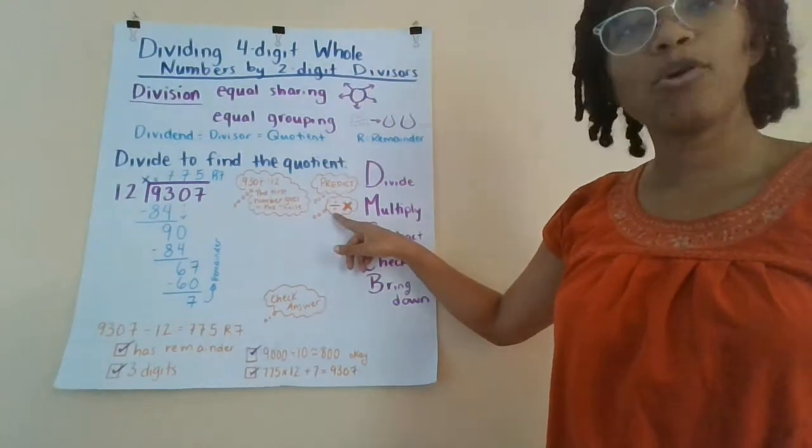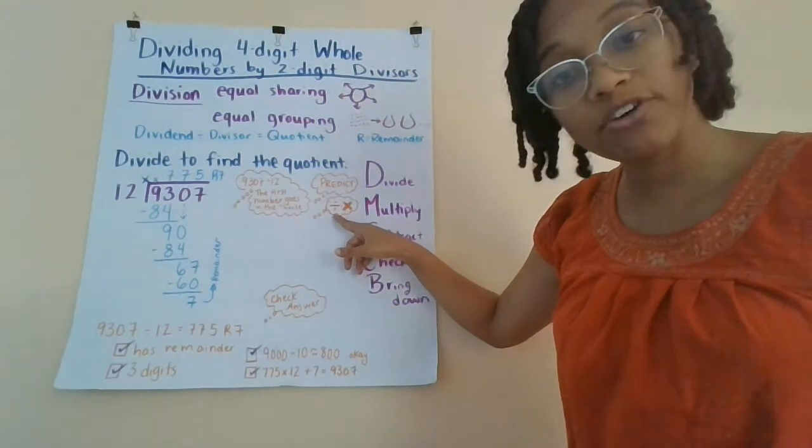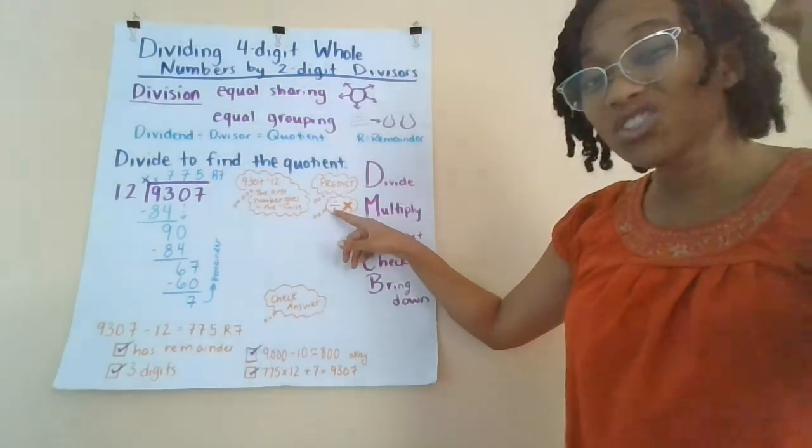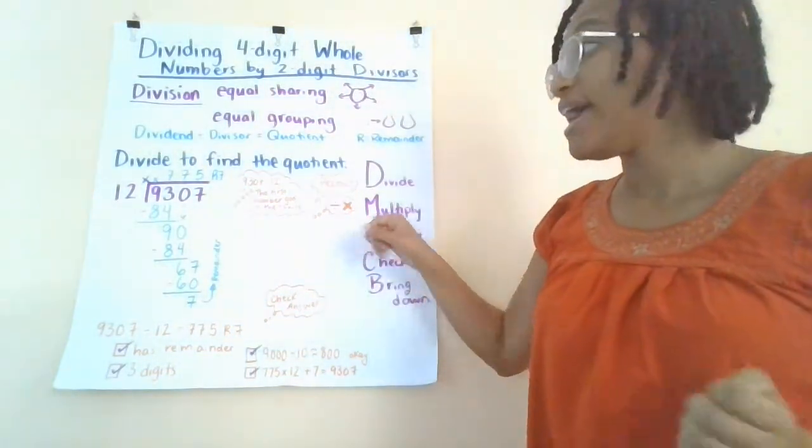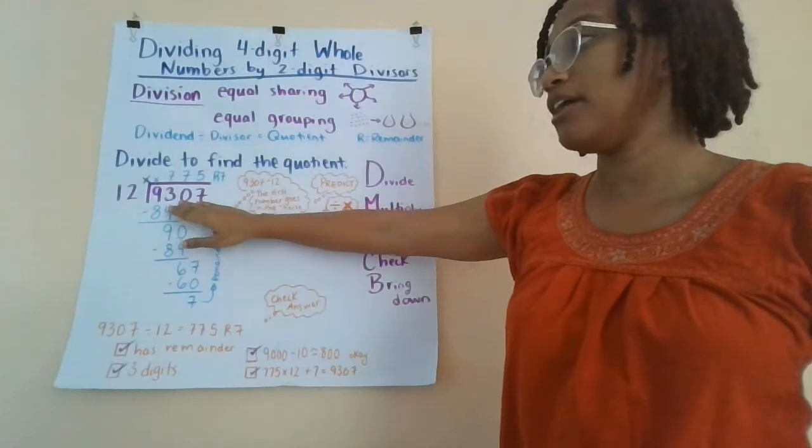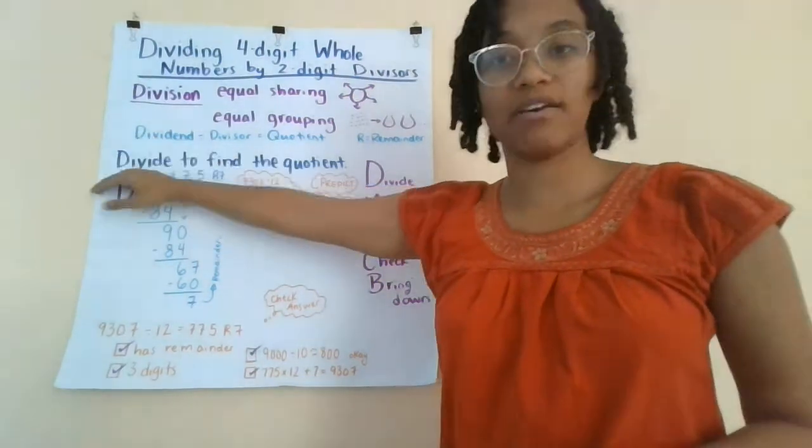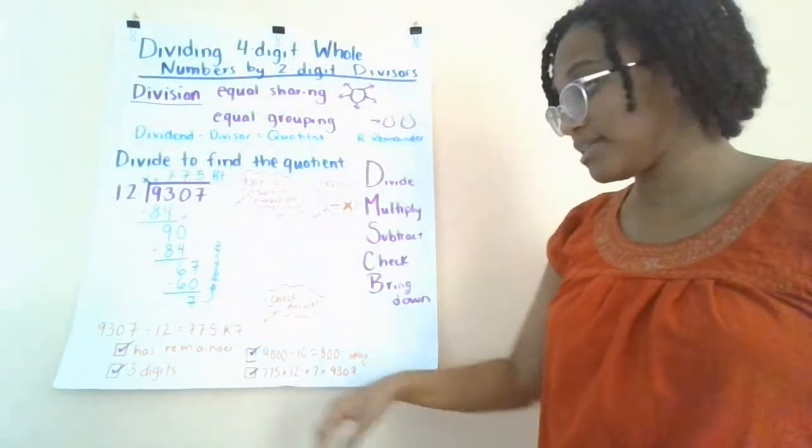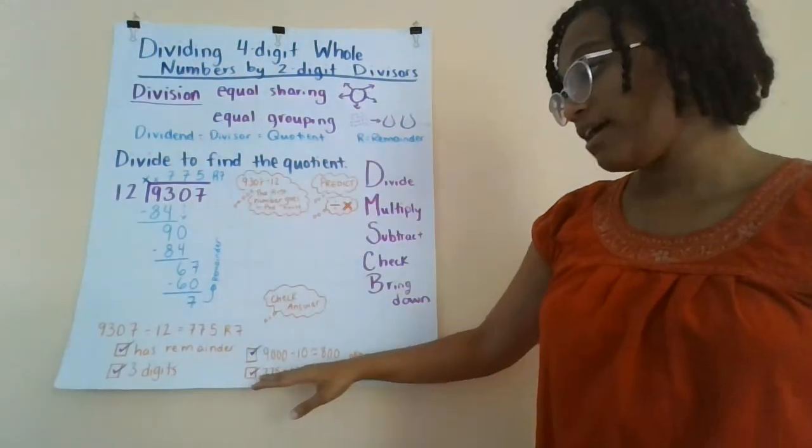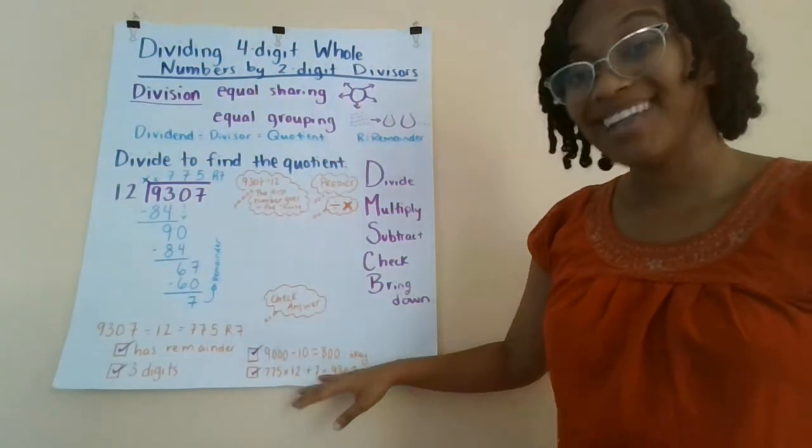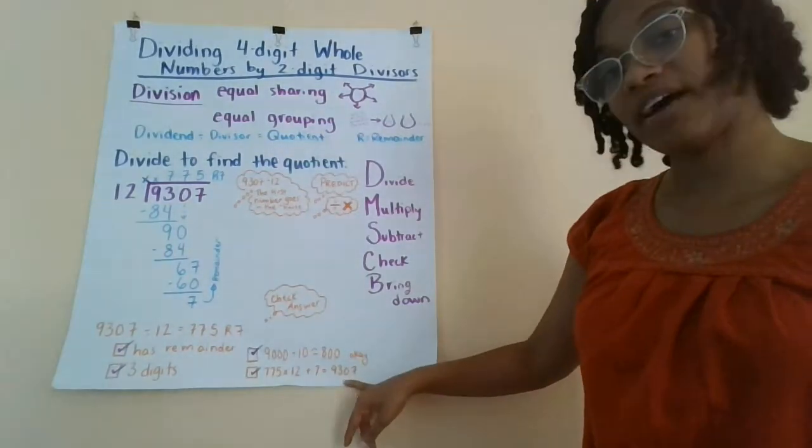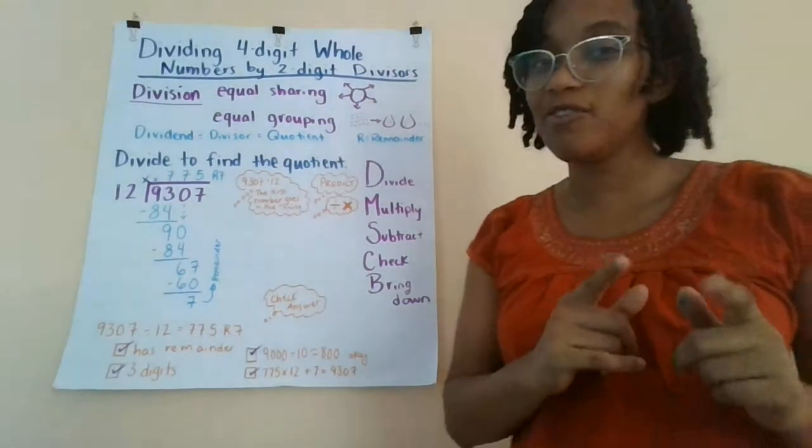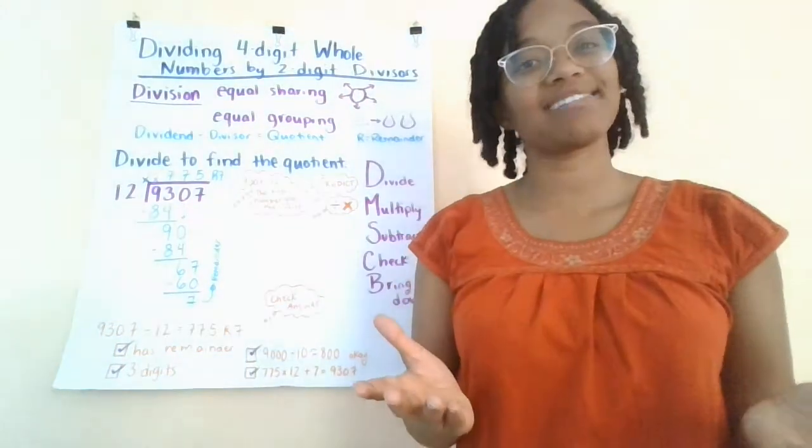And finally, we remember that multiplication and division are inverse operations. So if I want to super duper check my answer, I can always work backwards. Instead of doing 9,307 divided by 12 equals 775, I'm going to go backwards. 775 times 12 plus that remainder 7, that leftover, should equal 9,307. Believe you me, I did the math and it all checks out.